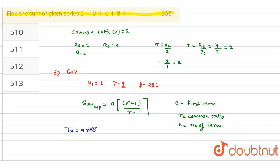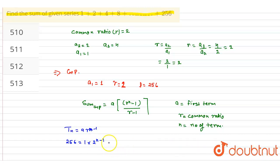The last term is given by a into r power n minus 1. So, the last term is 256, and the first term is 1 into 2 power n minus 1. So we now have 2 power n minus 1 is equal to 256, and 256 can be written as 2 power 8.